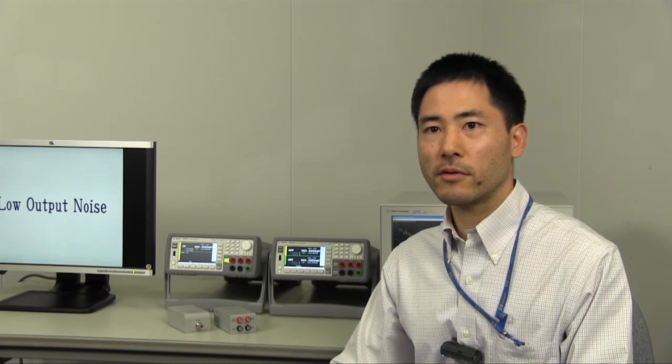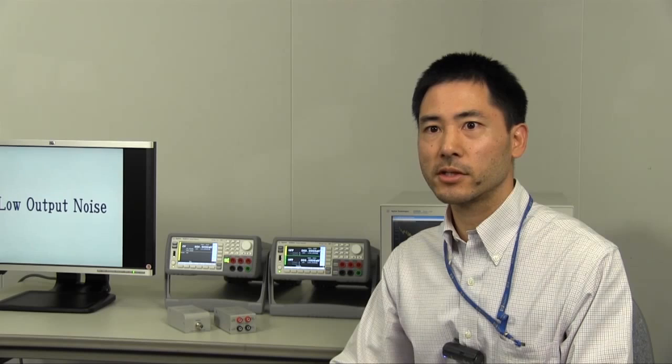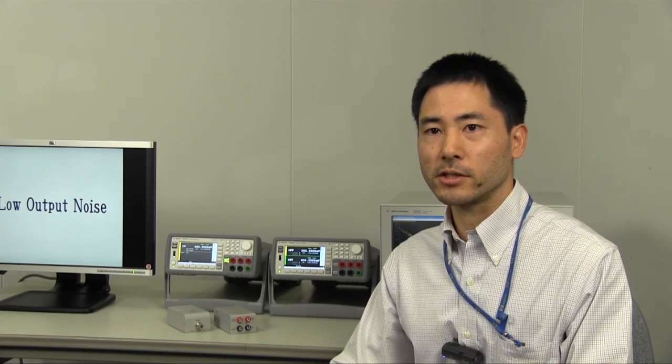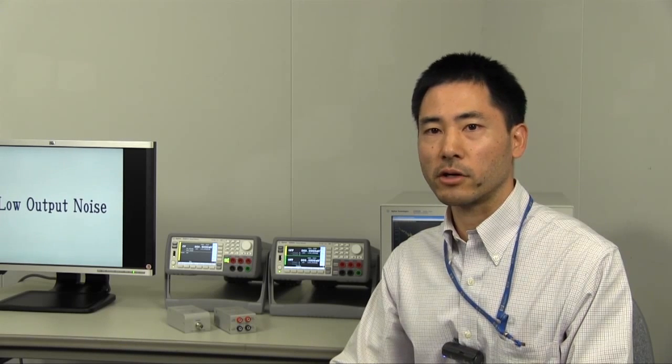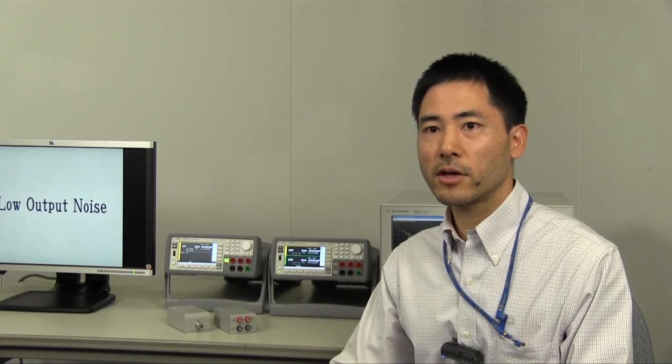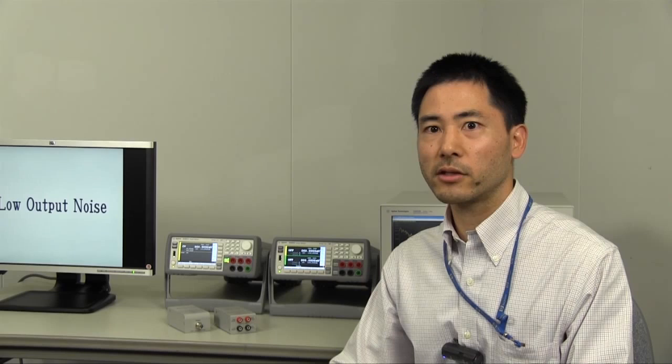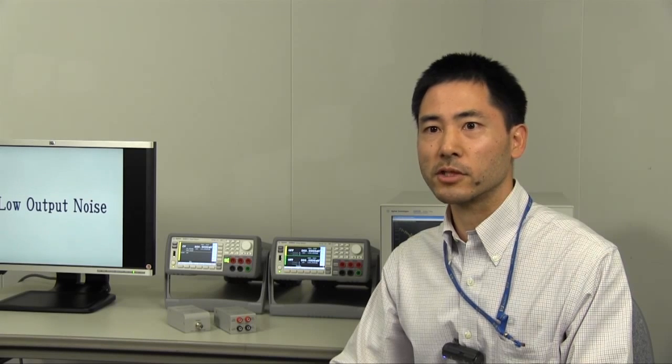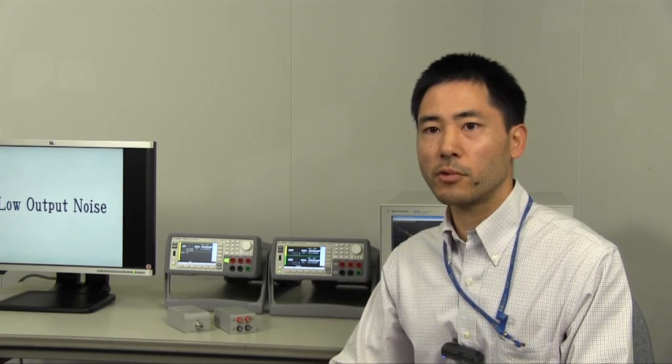First thing you think of when selecting a power supply or a signal source is the operation voltage range, current range, and power. For example, think of evaluating a circuit. When you're only checking the functionality or evaluating basic performance roughly, no other checkpoints would be necessary.